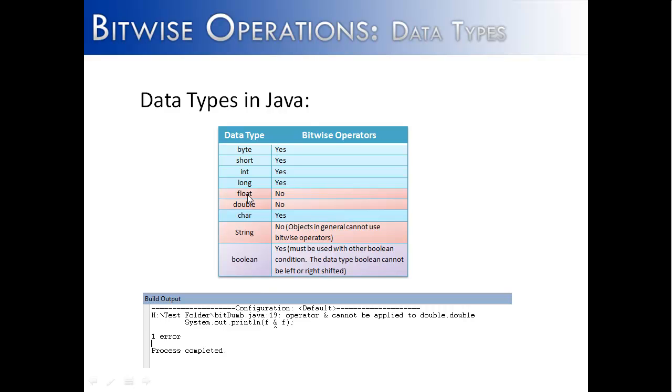Interesting enough, float and double cannot be shifted, and they cannot use the and, or, not operator. Characters can, because of their dual nature—they have both a character nature and an integer nature.